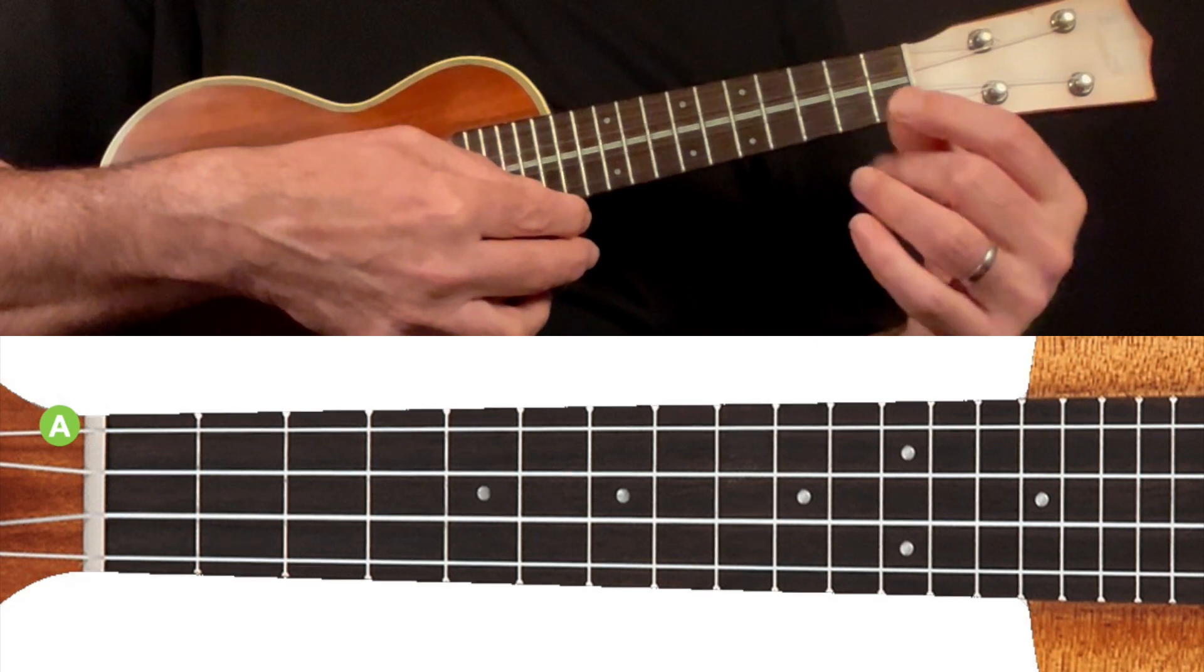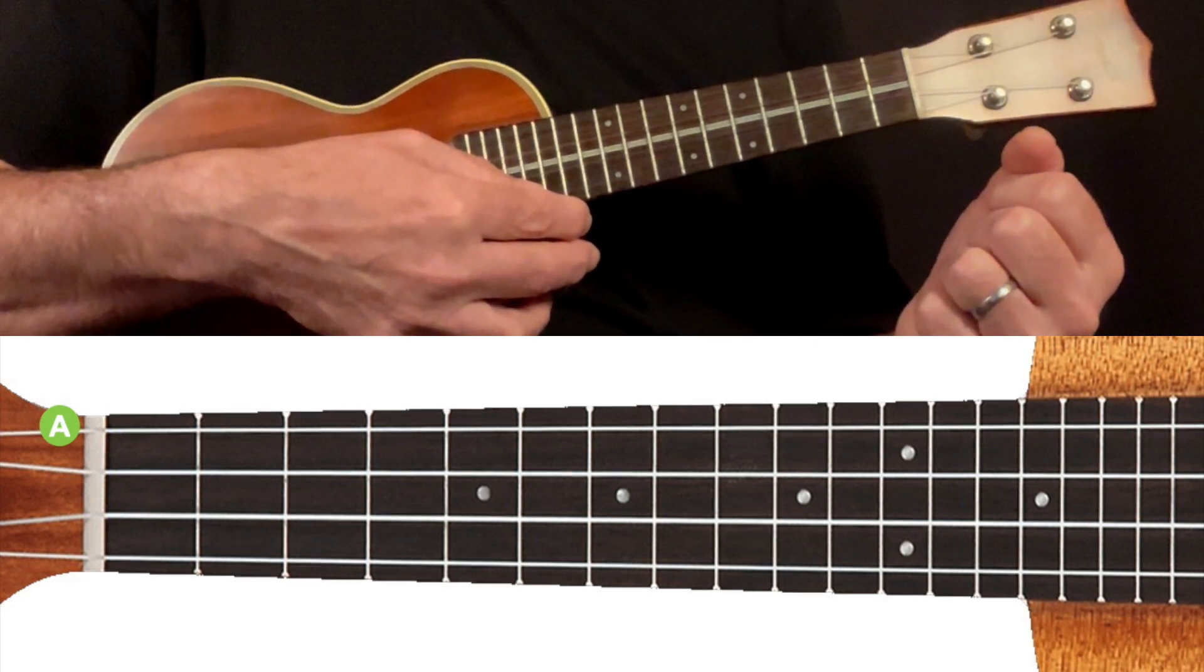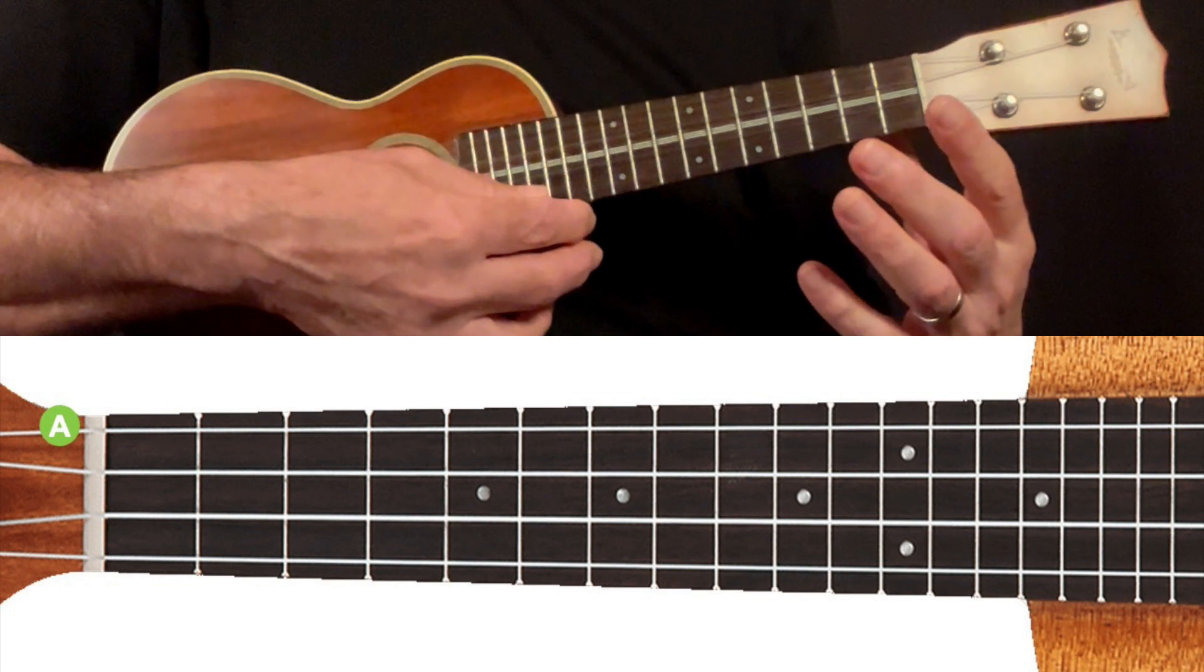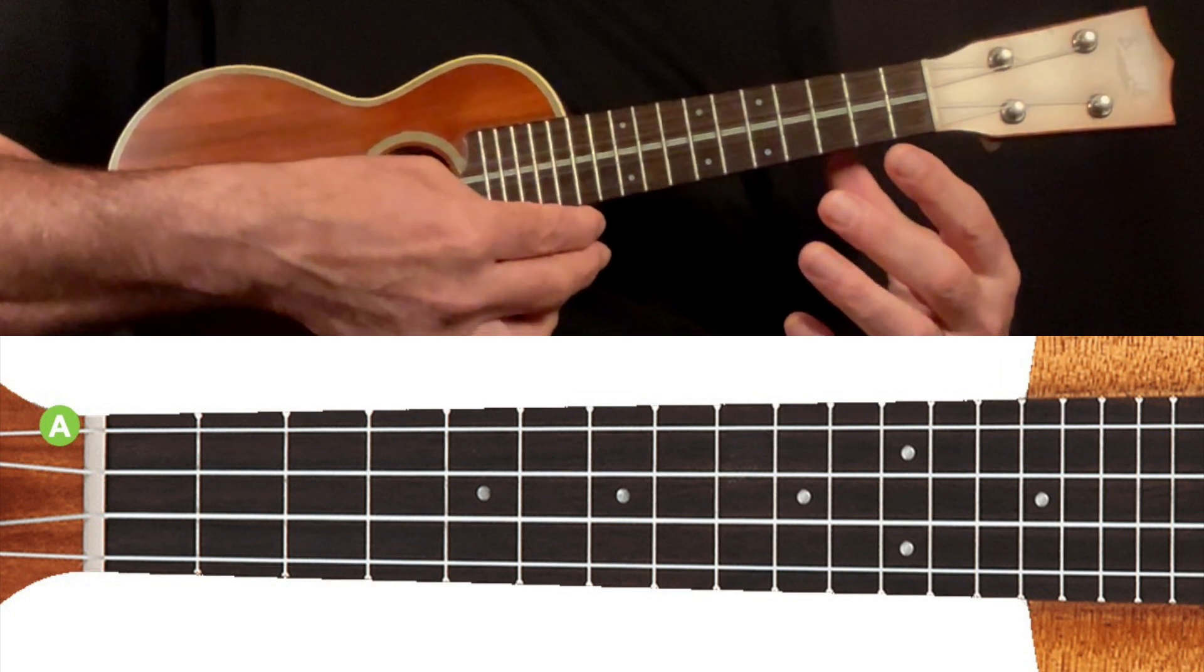But to keep things simple we're just going to use the first string for the rest of this exercise. So once again if we play the open string without fretting it, we have an A note.